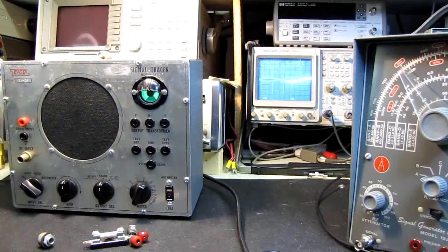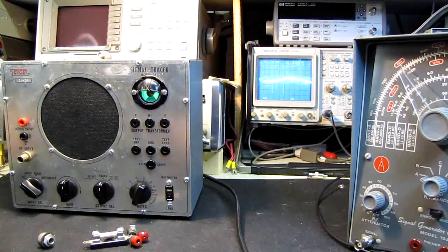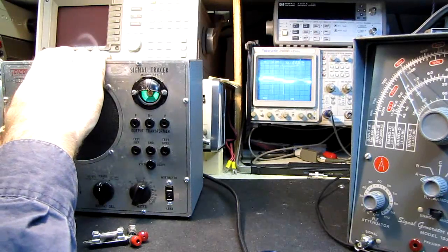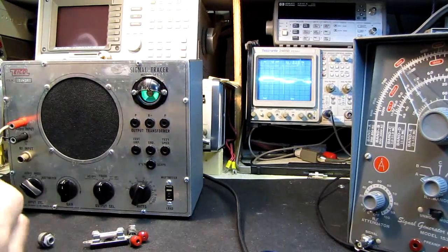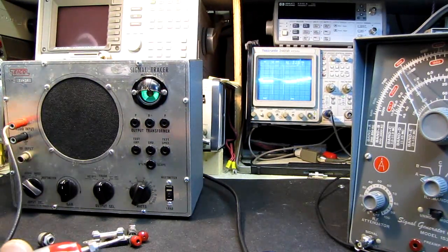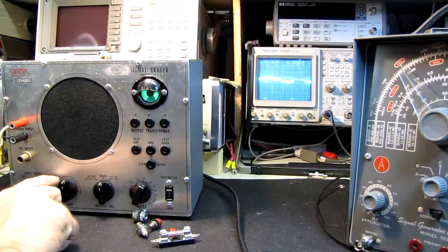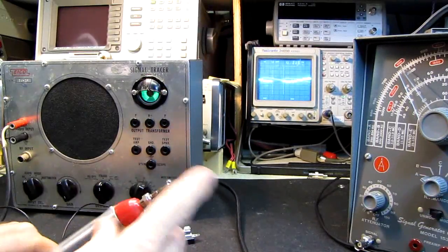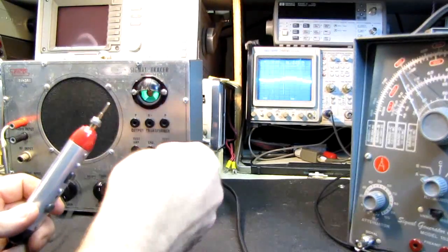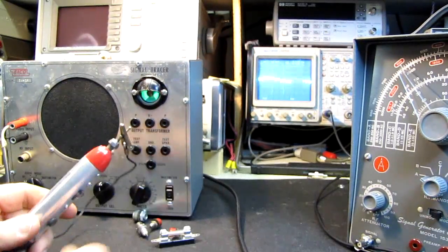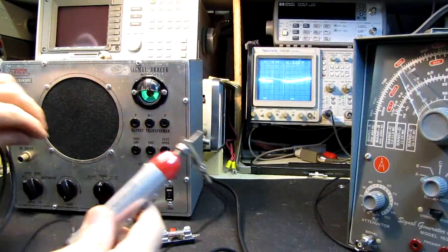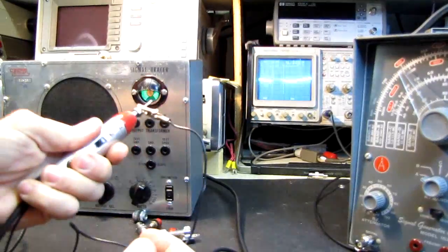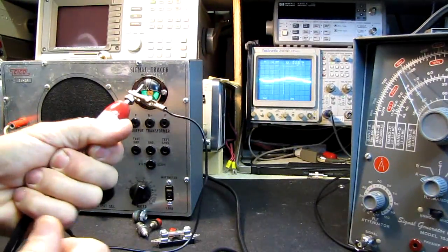Unplug that. Plug this back in. This is for tracing through the audio section. It's just a high gain amplifier. Not nearly as high gain as the RF input. We put this on audio and we'll be able to track through our audio section with that. Again, when I clip that on there, it becomes virtually silent. That's full volume.